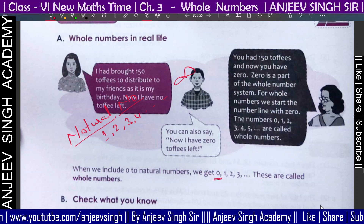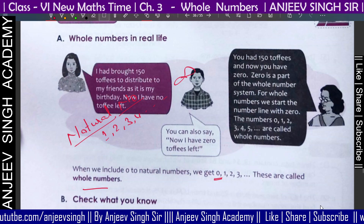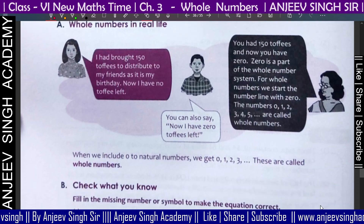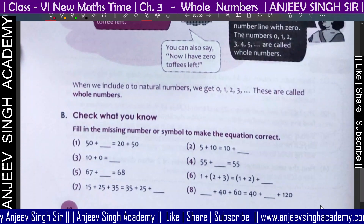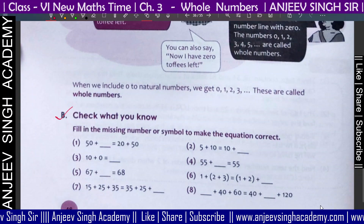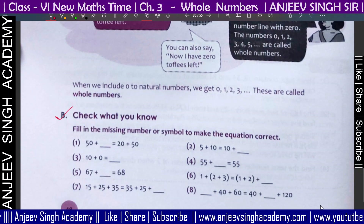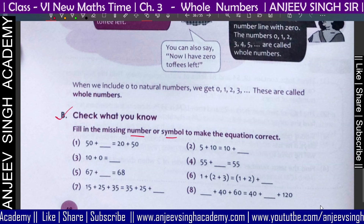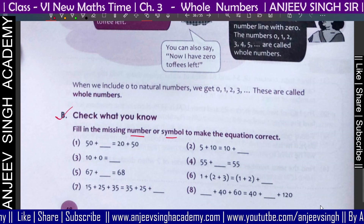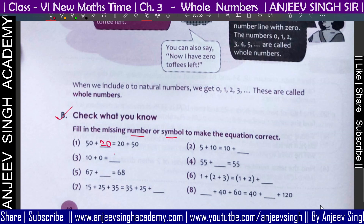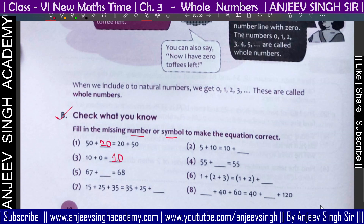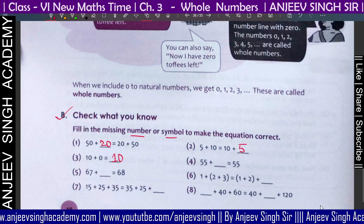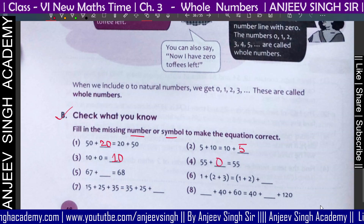When you start counting, the whole number begins. Let's check what you know. This is a very simple exercise — fill in the missing numbers or symbols to make the equations correct. Here: 50 plus dash equals 20 plus 50. So 20 plus 50 is 70. Also: 10 plus 0 is always 10. And 5 plus 10 equals 10 plus 5, giving 15 equals 15. So we add 55 here.